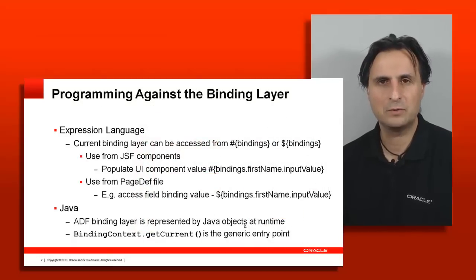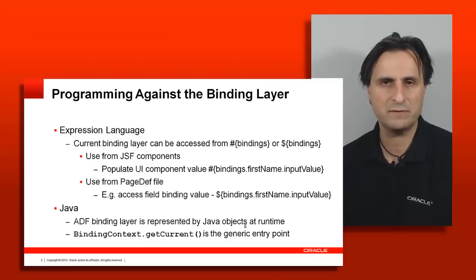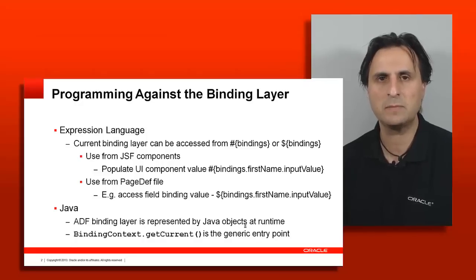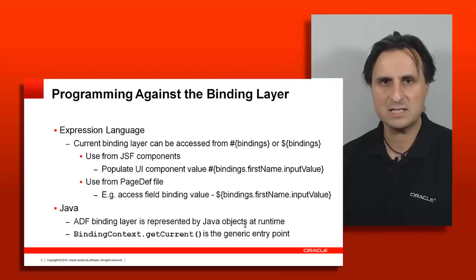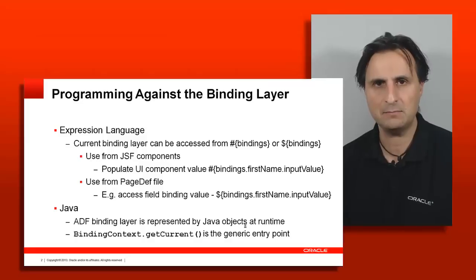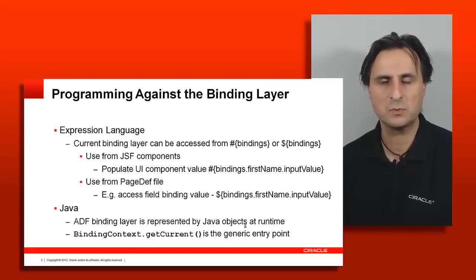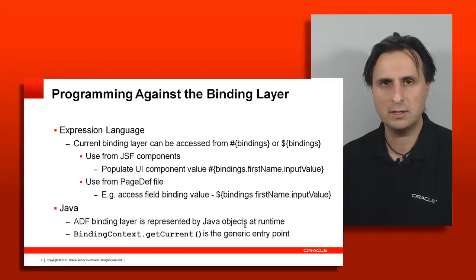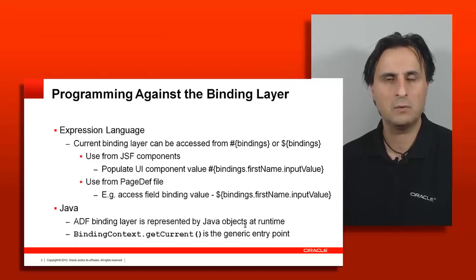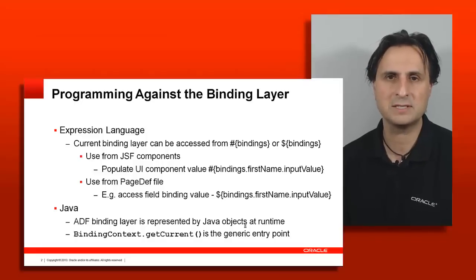How do you access the binding layer when building your application? There are two choices: expression language and Java. From expression language, to reach the binding layer you build an expression that references bindings as the top-level object. So #{bindings} gives you access to the binding container. If you want to access a tree binding within this binding container you would use #{bindings.treeBindingName}, and then call something like collectionModel to populate a tree. To access an attribute you could use #{bindings.firstName}